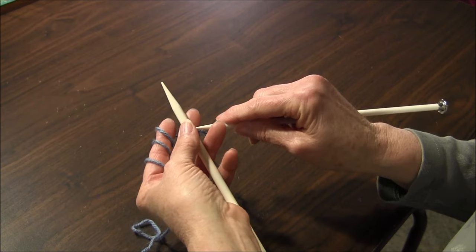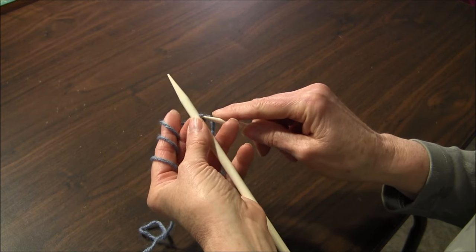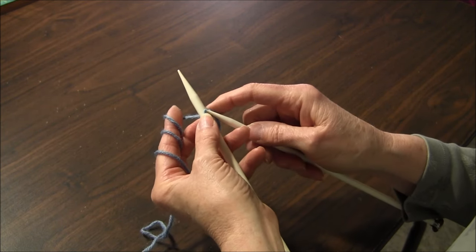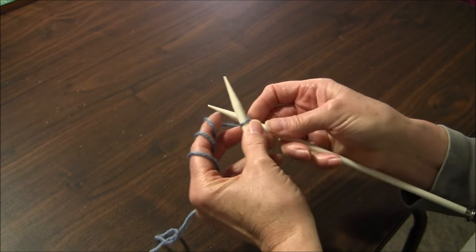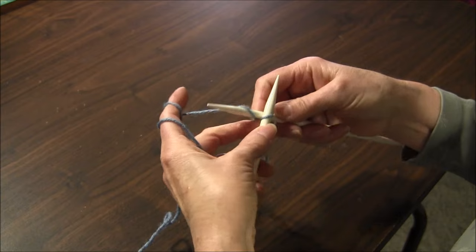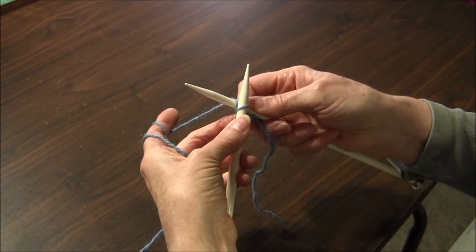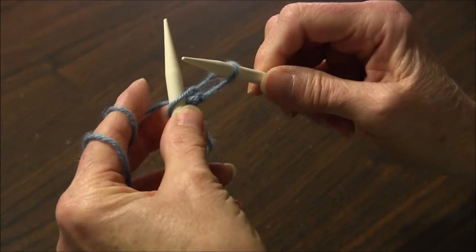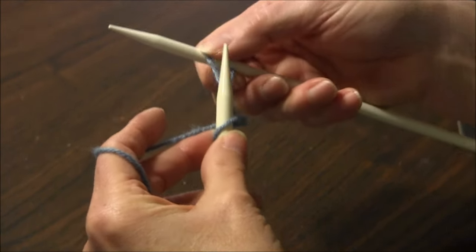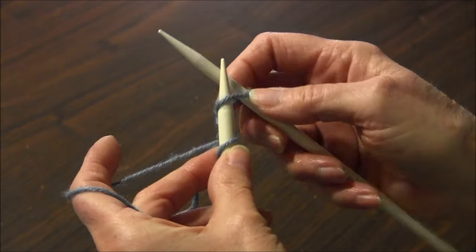Insert the right-handed knitting needle into the first stitch or the slipknot. Wrap the yarn around. Pull it through. Now this is the important part. You do a little twist and you put it on your knitting needle.